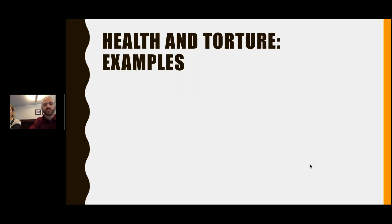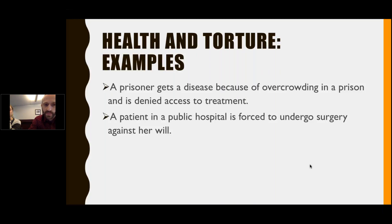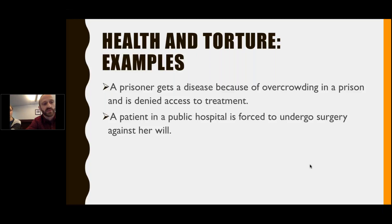What are some specific examples of torture involving health? If a prisoner gets a disease because of overcrowding in a prison and is denied access to treatment, in most jurisdictions and under international law, that would constitute torture. If a patient in a public hospital is forced to undergo surgery against her will, that would also constitute torture. Importantly, torture can happen in places aside from prisons — including state-run or state-commissioned private detention centers.